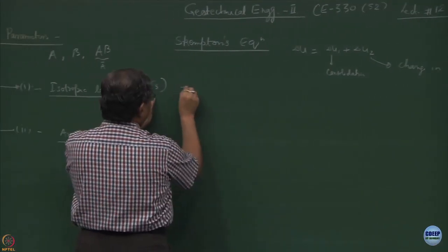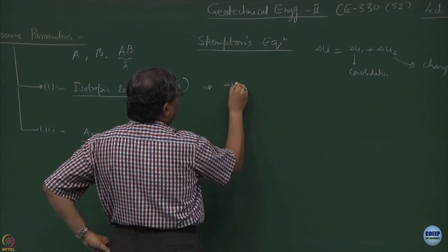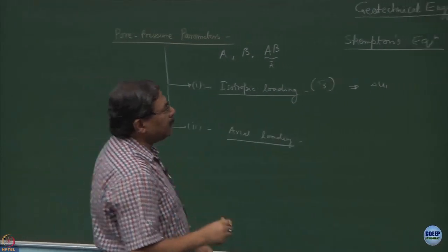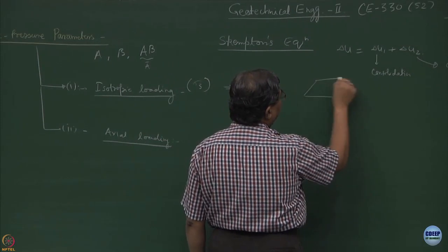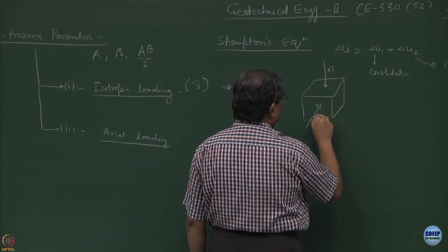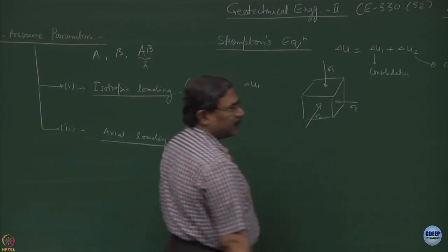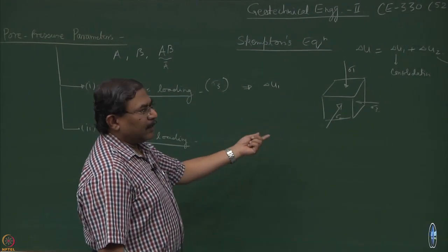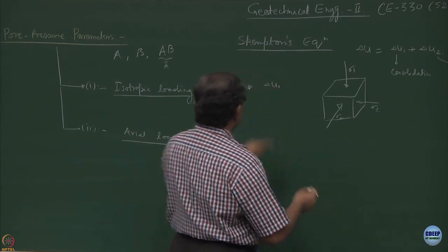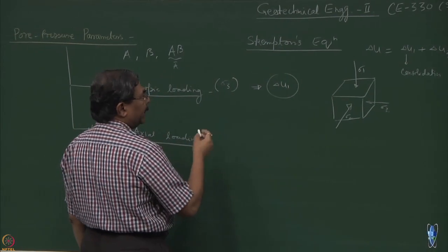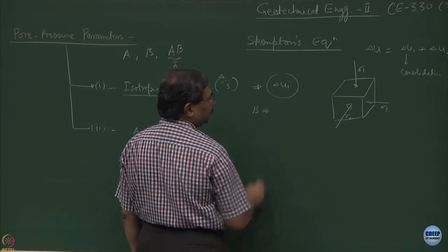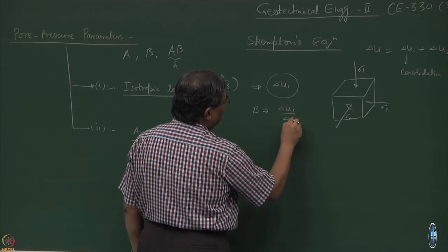So, this sigma 3 is responsible for giving delta u1 isotropic condition. Isotropic condition means if I consider an element of soil and if I load it from all round directions sigma 1, sigma 2, sigma 3 suppose if it is general case. So, sigma 1, sigma 2, sigma 3 are going to be same equal to sigma 3 which is going to cause increase in pore pressure. So, to be precise what we should be writing is change in delta sigma 3 is causing delta u1. The ratio of the 2 we have defined as B parameter this is equal to delta u1 upon delta sigma 3.